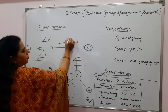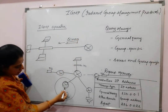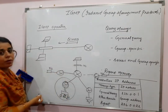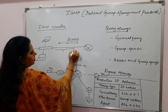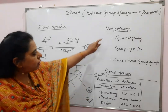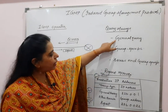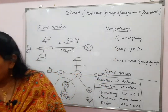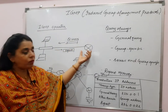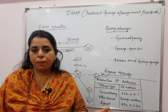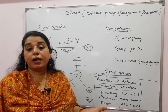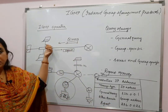The router sends a query message to the network, and the network responds with a report message. The query message itself can be of three types: one is the general query, another is the group specific query, and the third is the source and group specific query. For the general query, the router is simply trying to know the members belonging to any group in general.